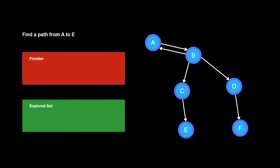Here we have a graph consisting of 6 nodes connected by edges. For our case, edges represent actions. We need to find a path from node A to node E, so node A contains the initial state and node E contains the goal state. We start with node A in the frontier and an empty explored set. The frontier is not empty, so we remove node A from the frontier. Node A does not contain the goal state, so we add node A to the explored set. By expanding node A, we get node B as the resulting node. Node B is not already in the frontier or the explored set, so we add node B to the frontier.